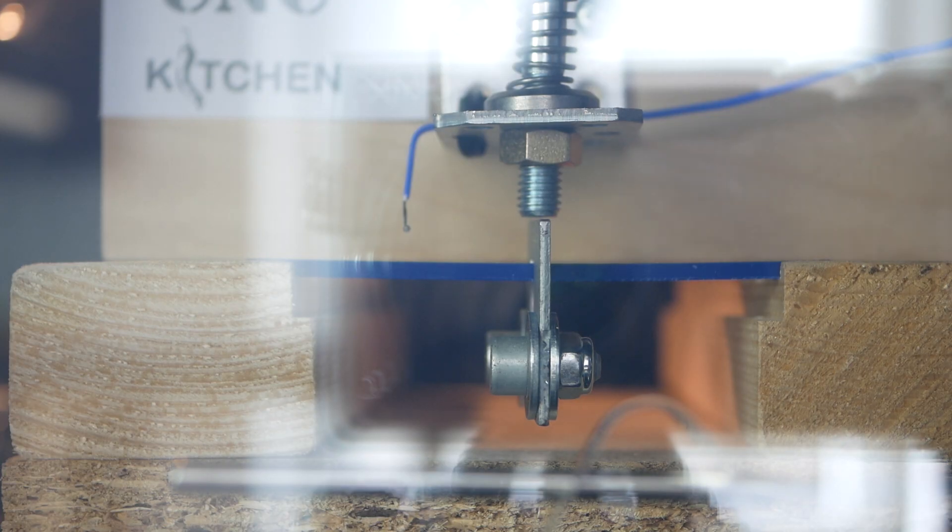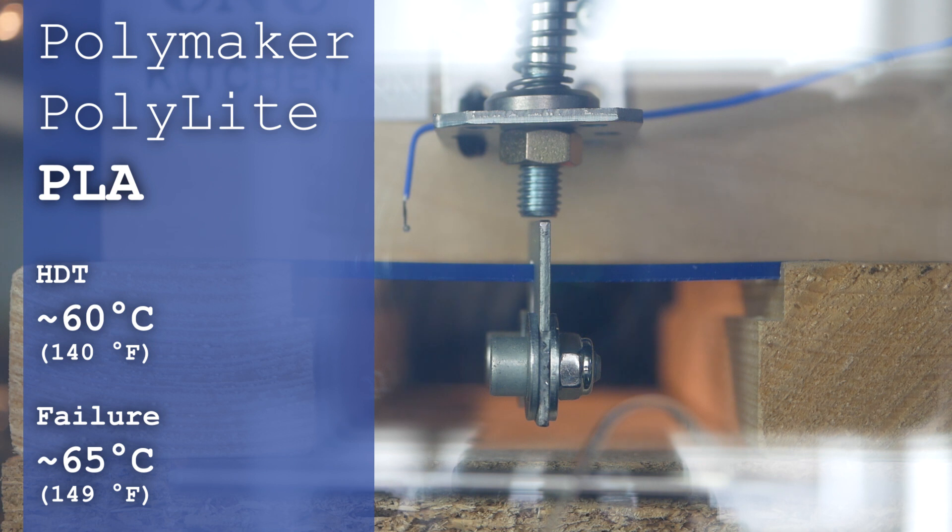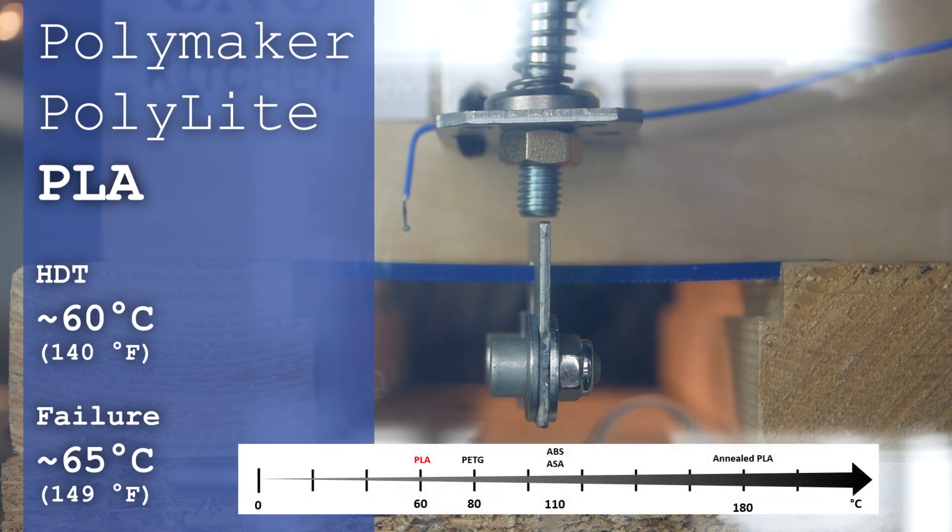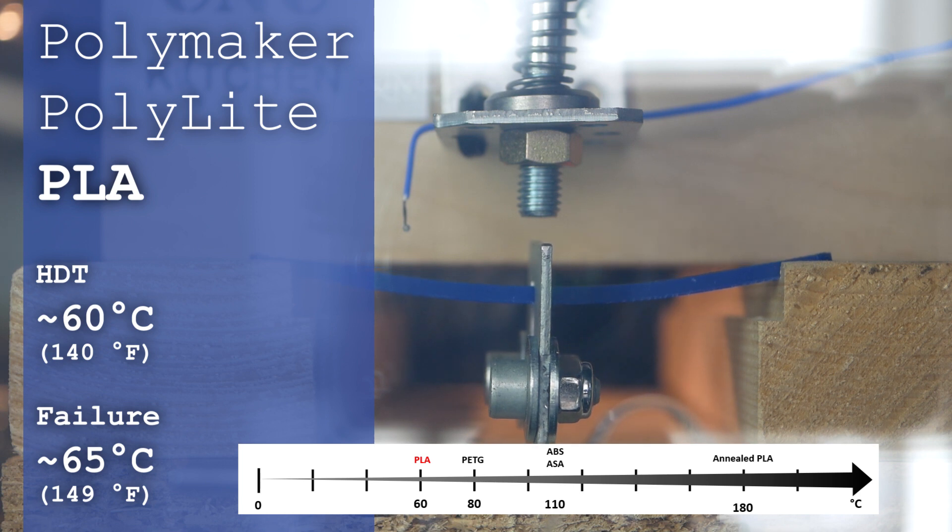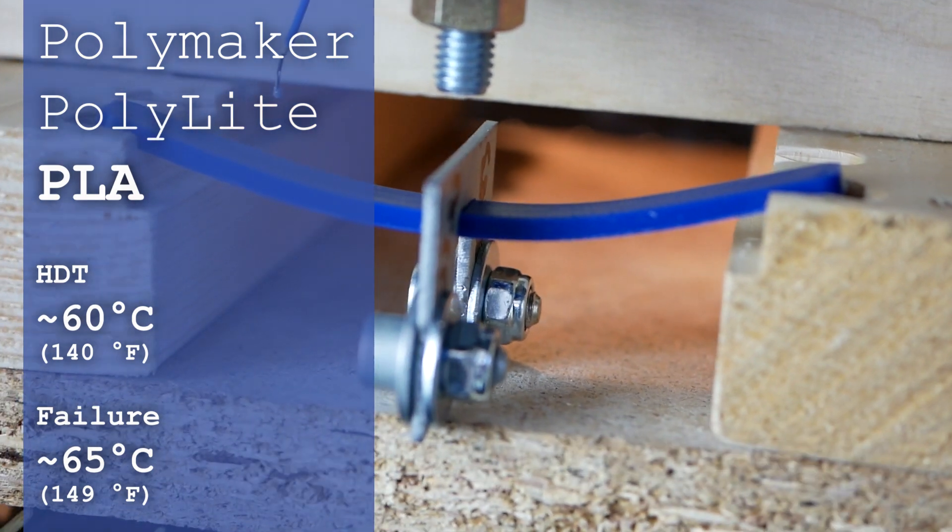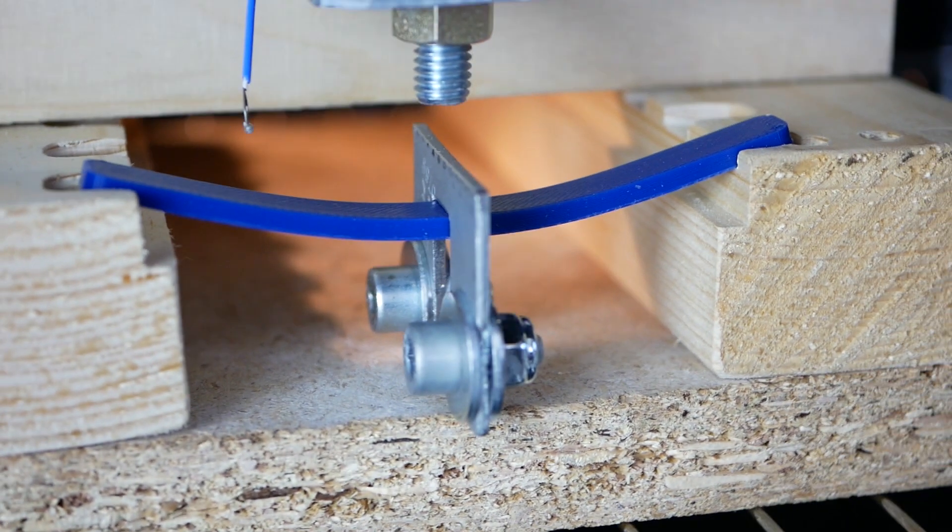The temperature test specimens softened at around 60 degrees Celsius and then totally failed at 65 degrees Celsius, which is just like most other PLA-based filaments. So be aware using these materials at temperatures far above ambient.